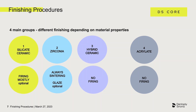The group of silicate ceramics is probably the most inhomogeneous and diverse group, since there are differences in the processing of individual materials, especially with regard to the necessary glaze or crystallization in the kiln. In the group of zirconia, a sintering process in the kiln is always necessary, while a stain and glaze firing is optional. In both hybrid ceramics and acrylates, things look very simple — both material groups are not allowed to go into the kiln.